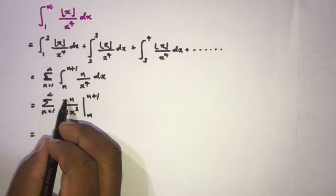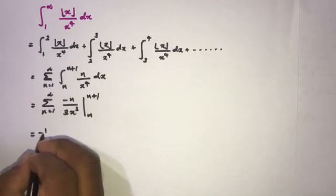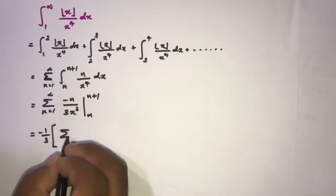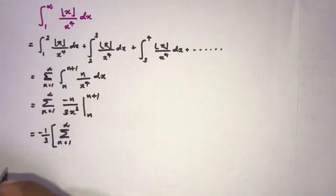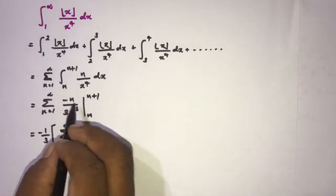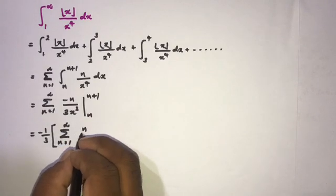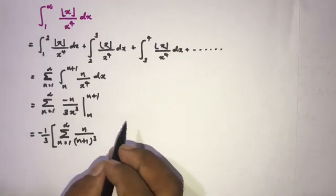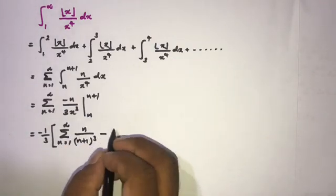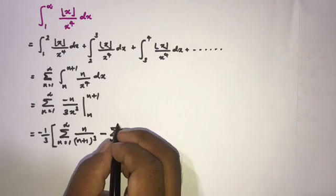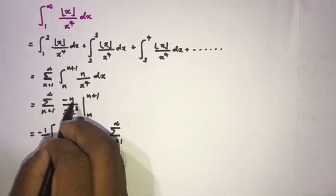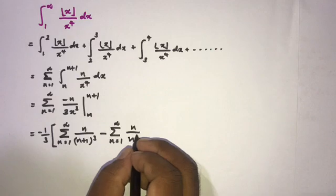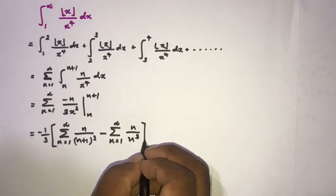Factoring out the constant minus one-third, we get minus one-third times the infinite sum from n equals one to infinity of: n over (n+1)³ minus n over n³. Simplifying n/n³ gives 1/n².